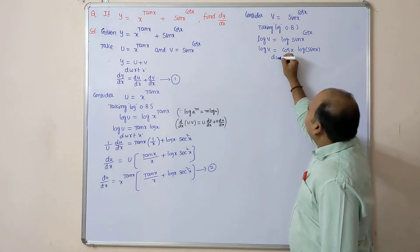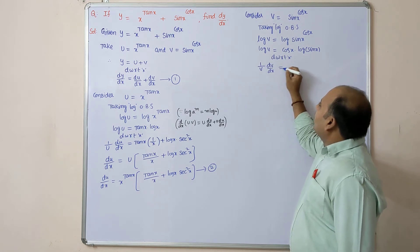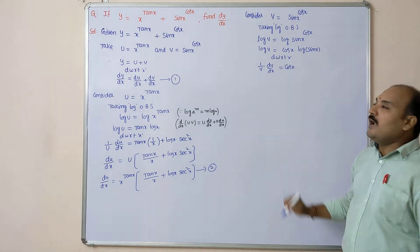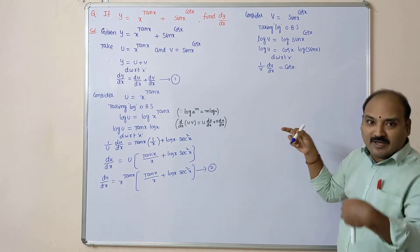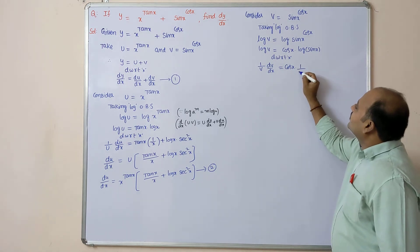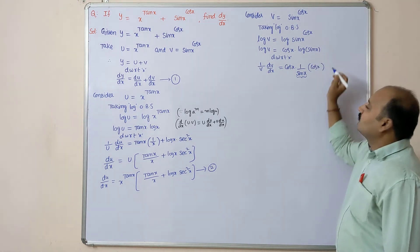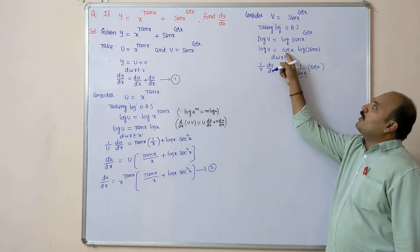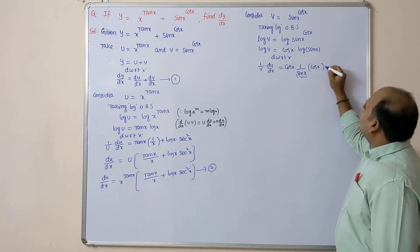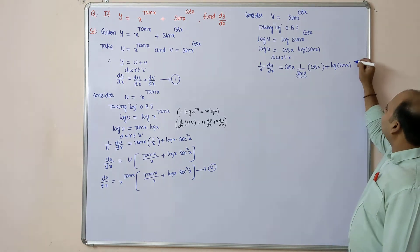Differentiate with respect to x. The derivative of log v gives (1/v) · dv/dx. Apply the product rule: cos x · d/dx(log sin x) + log(sin x) · d/dx(cos x). Now d/dx(log sin x) = (1/sin x) · cos x. And d/dx(cos x) = −sin x.